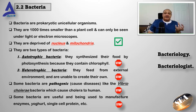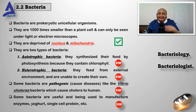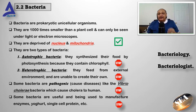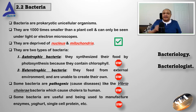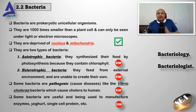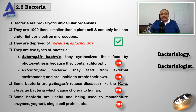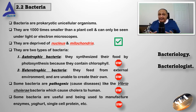We have two types of bacteria depending on the way they obtain their food: either autotrophic bacteria or heterotrophic bacteria. Autotrophic bacteria are the type that can synthesize their own food because they contain chlorophyll. While heterotrophic bacteria feed from the external environment, eating from there — they are unable to make food by themselves.